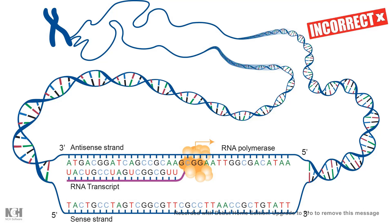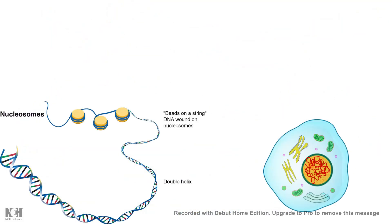Second, we have to understand the compaction status of the chromatin at that point in time. A gene is a part of chromatin — the bigger picture is the chromatin. So we cannot imagine a gene as just a part of DNA; we have to imagine a gene as a part of chromatin.